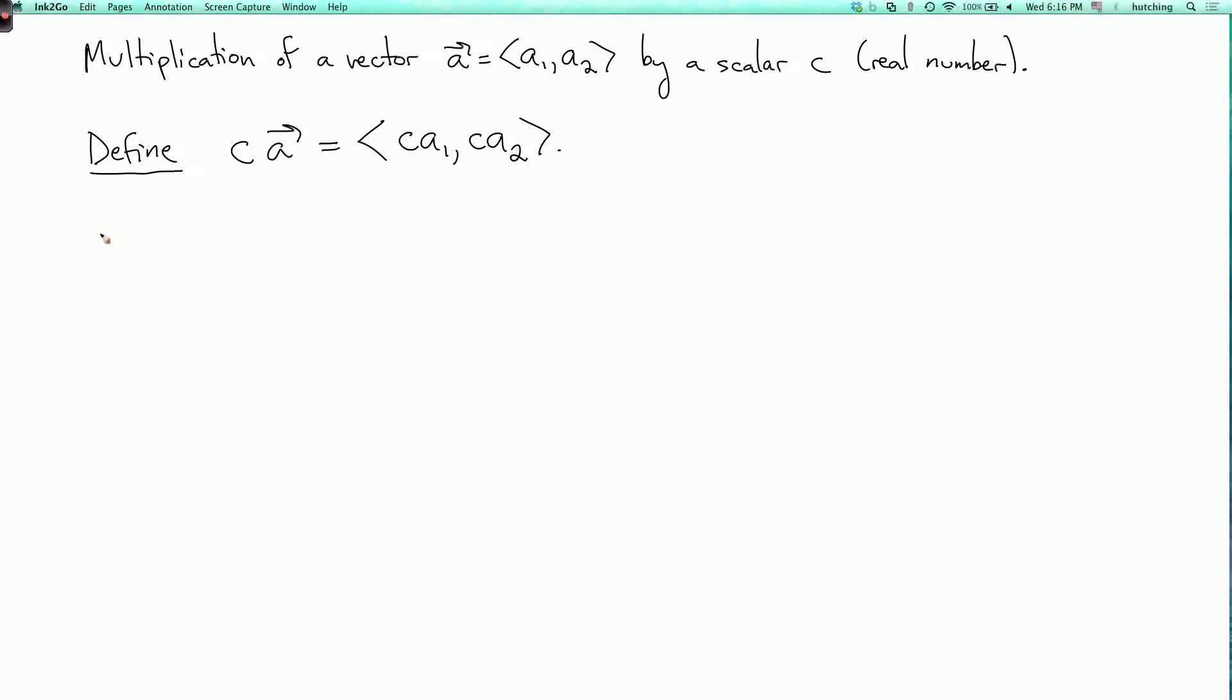And what's the geometric meaning of this? So if C is bigger than zero, then C A points in the same direction as A. And the length is multiplied by C. And if C is negative, then this points in the opposite direction. The length is multiplied by the opposite value of C.